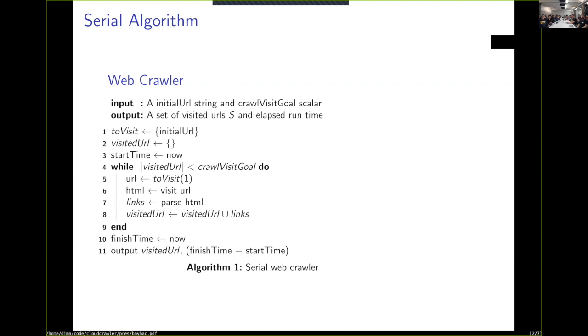and then you parse HTML, get those links, and then do a union between your discovered links and the visited links. You just repeat this until you reach the number of URLs you want. The output would be your visited URLs and then the total time.